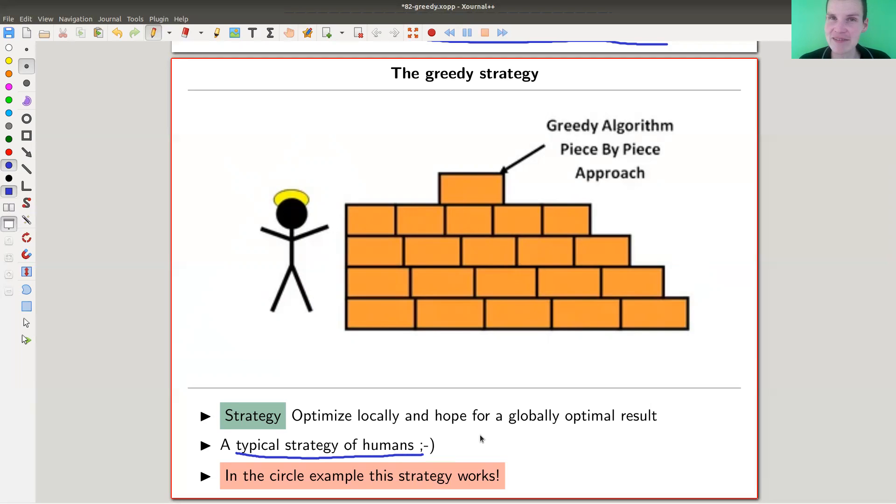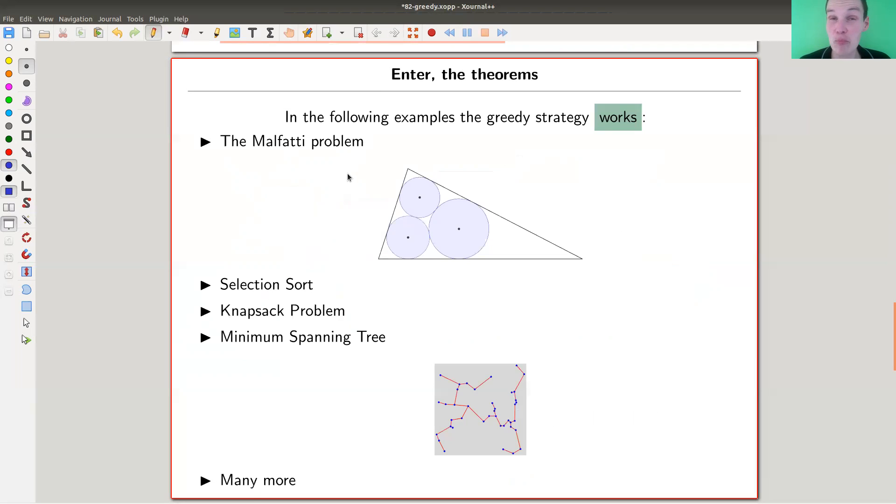But in some cases, this strategy is optimal, right? The local strategy is actually the best global strategy. And this is remarkable. This really rarely happens. In my circle example here, the Malfatti problem, it does, it is the case. So the very, very greedy and locally optimal approach, put the biggest circle possible, gives you the optimal solution in general. And this is really non-trivial. This is really non-trivial and happens remarkably often.